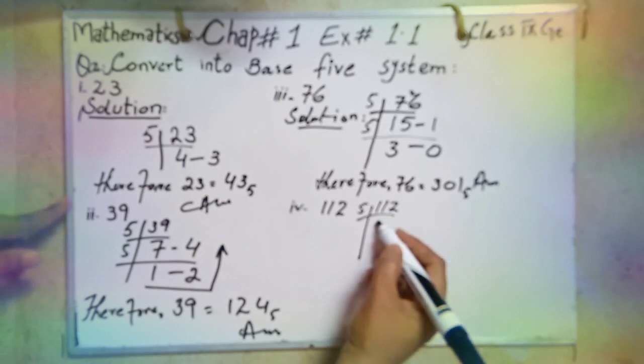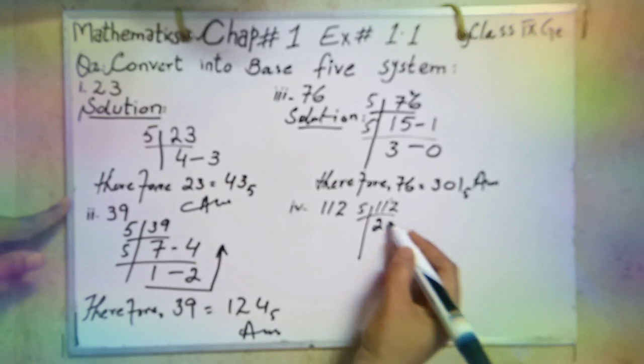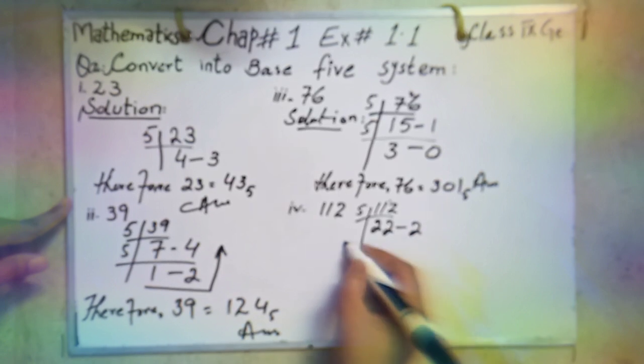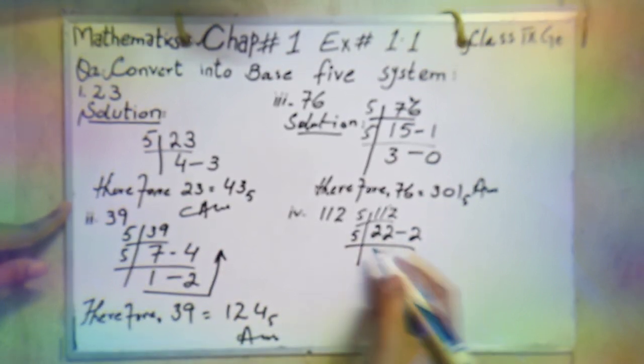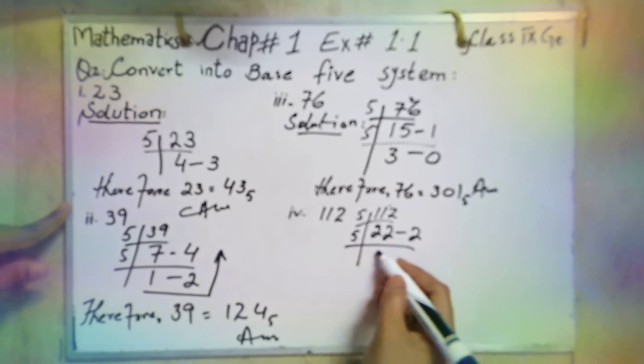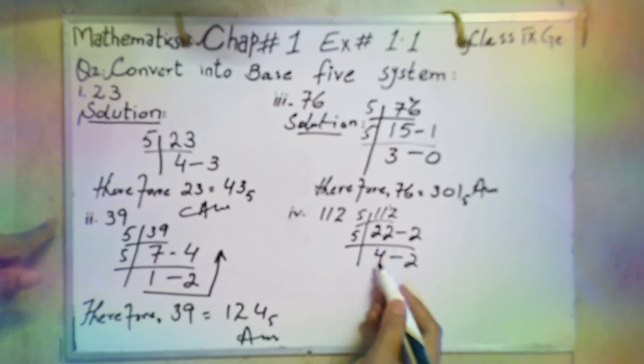5 times 1 is 5, 5 times 2 is 10, 1 is left. It has become 12, 5 times 2 is 10, 2 is left. Again, same table. 5 times 4 is 20, 5 times 5 is 25. 25 is a bigger number, so 5 times 4 is 20. 2 is left. Now the last, this digit. It's a last step, it's less than 5, so this will be the end.